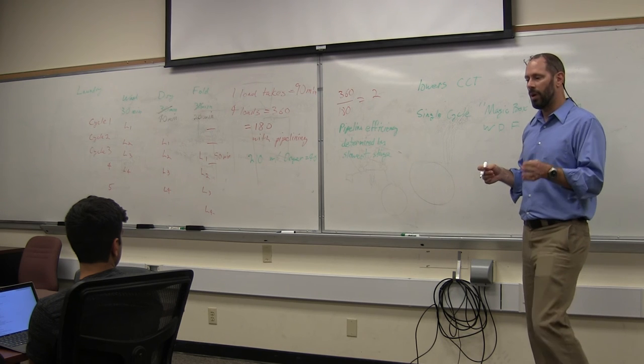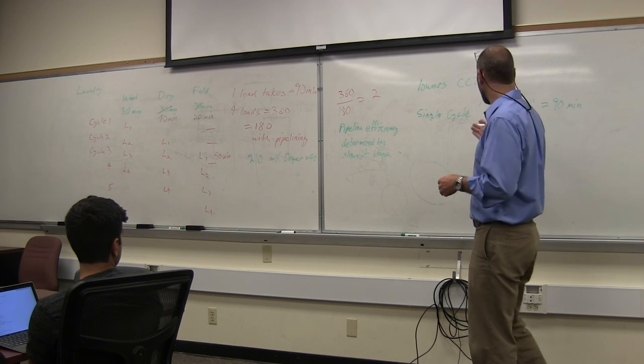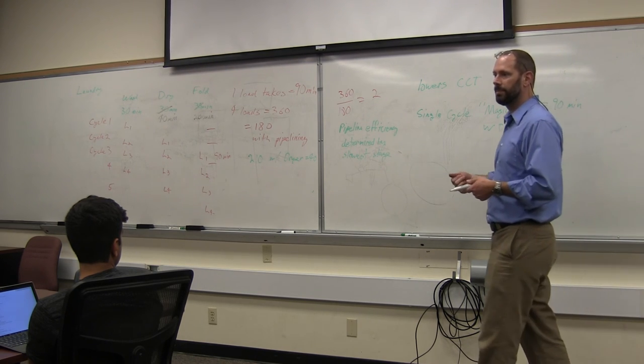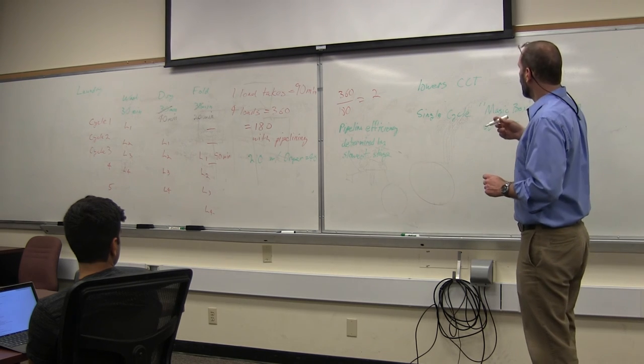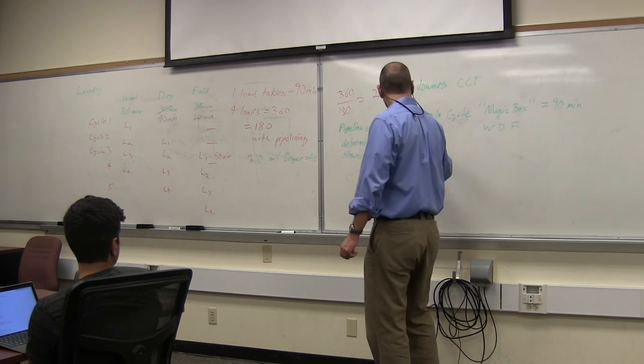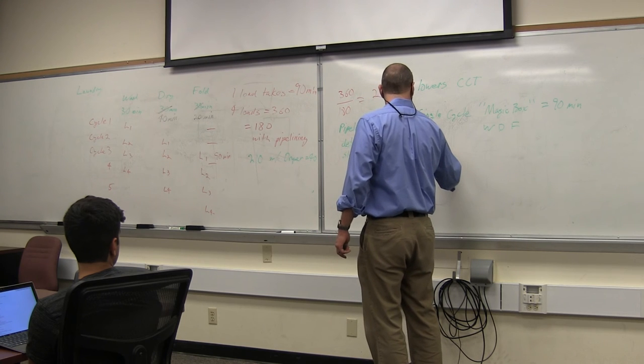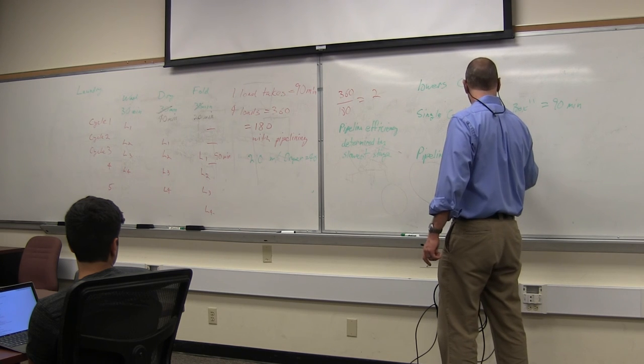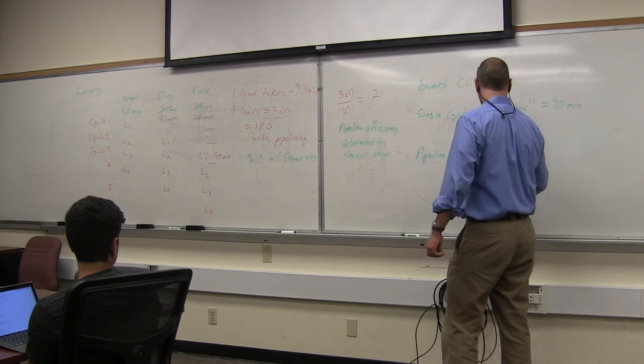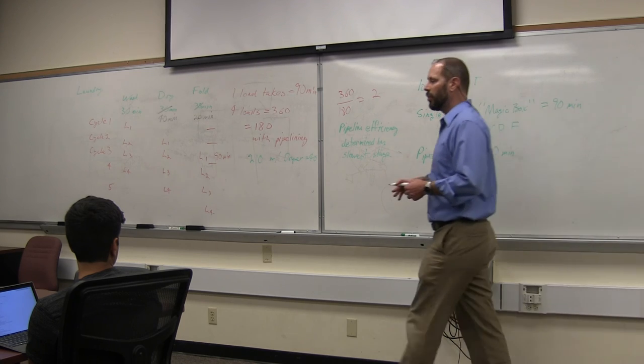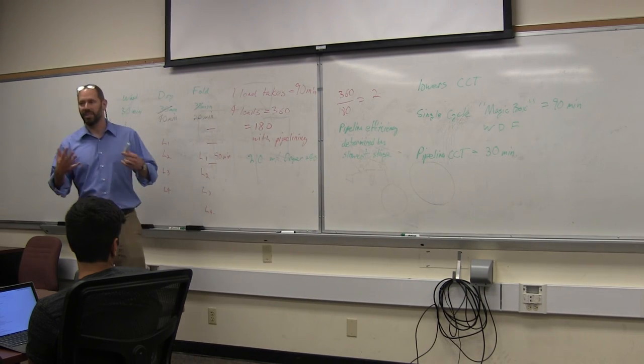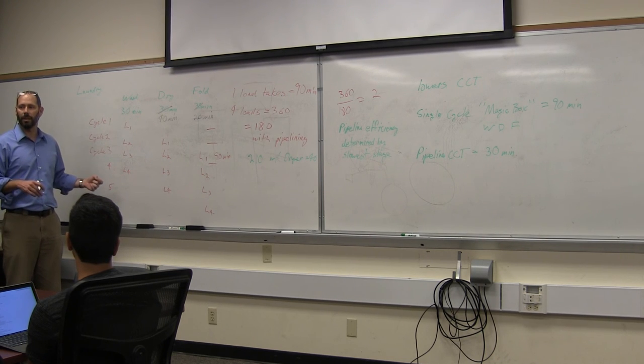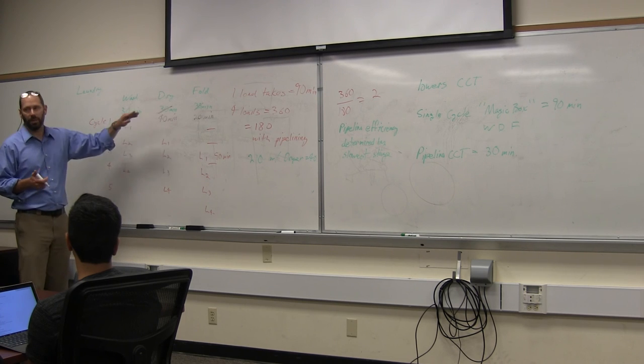Can you explain why it lowers the CCT? Yes. The magic box which does wash, dry, fold takes 90 minutes to do that. So our clock cycle time is 90 minutes between the time we put one set of laundry into the magic box to the time we can put the next set of laundry into the magic box.